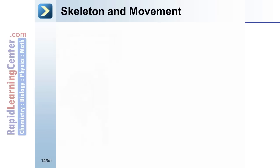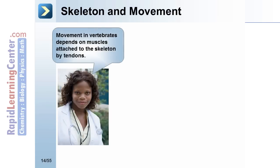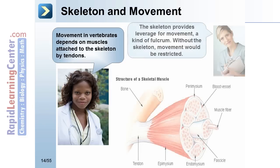Movement in vertebrates depends on muscles attached to the skeleton by tendons. The skeleton provides leverage for movement, acting as a kind of fulcrum. Without the skeleton, movement would be restricted.